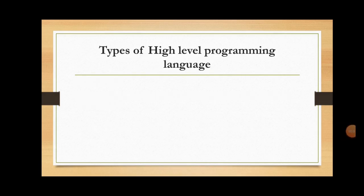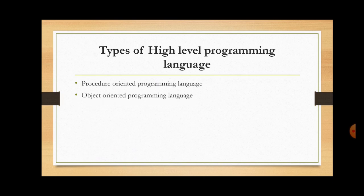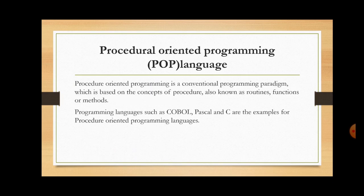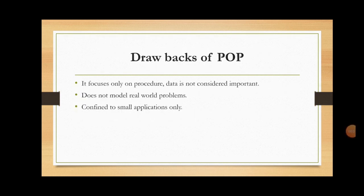Next, we will discuss the types of high-level programming languages. The most popular types are procedure-oriented programming language and object-oriented programming language. Procedure-oriented programming is a conventional programming paradigm based on the concepts of procedures, also known as routines, functions, or methods. A procedure is a set of instructions which performs a particular task. The most popular languages like COBOL, PASCAL, and C fall into this category. The drawbacks of procedure-oriented programming are that it focuses only on procedures and data is not considered important. It also does not model real-world problems and hence is confined to building only small applications.